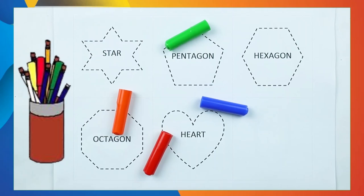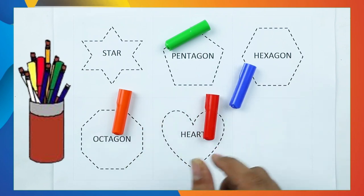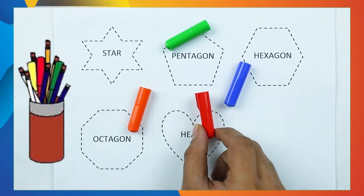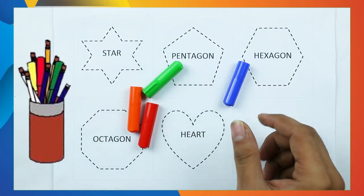Hello friends, today we learn shapes: star, pentagon, hexagon, octagon, and heart with colors. Blue color, orange color, red color, green color.